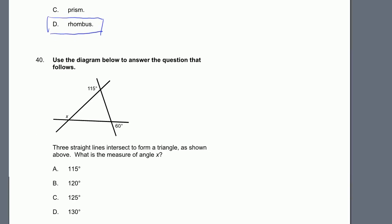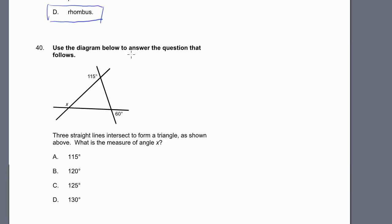Problem 40. Use the diagram below to answer the question. Three straight lines intersect to form a triangle. What is the measure of angle x? We use our angle rules — the angle game. We have 60 degrees here; its vertical opposite angle is also 60 degrees.